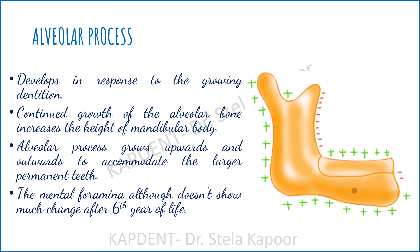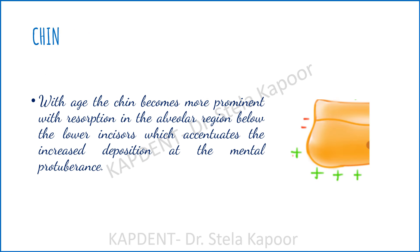The growing dentition acts as a stimulus in response to which the growth of the alveolar process takes place. It is the increased growth of the alveolus which ultimately contributes to the height of the mandibular body. The alveolus grows not just upward but also outward to accommodate the larger permanent teeth. Apart from this, the mandibular foramen does not show much change after the 6th year of life. With advancing age, the chin tends to become more prominent as a result of combined resorption in the alveolar region below the lower incisor and increased deposition at the mandibular protuberance.